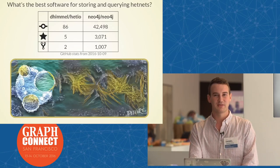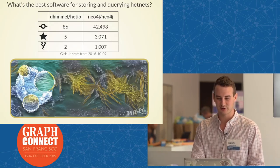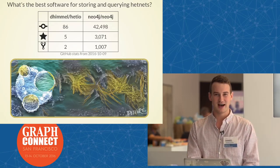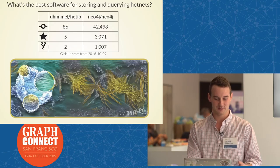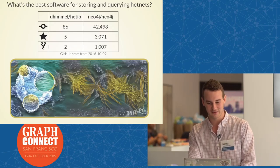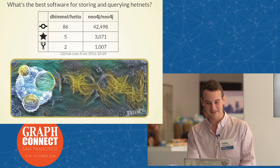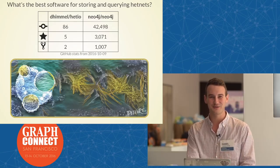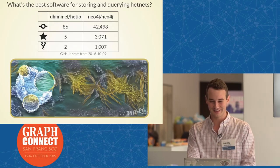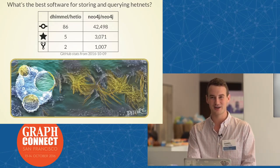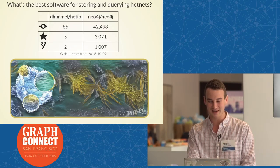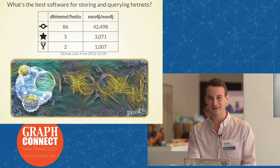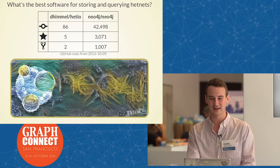The next question was what's the best software for storing and querying these HETNETs? HETIO was a Python package that I created. Over the years it accumulated 86 commits, 5 GitHub stars, and 2 forks. When I learned that the Neo4j project offered the same functionality and more — with 42,000 commits, over 3,000 stars, and 1,000 forks — I said, that's a thriving open source community that I want to be part of.